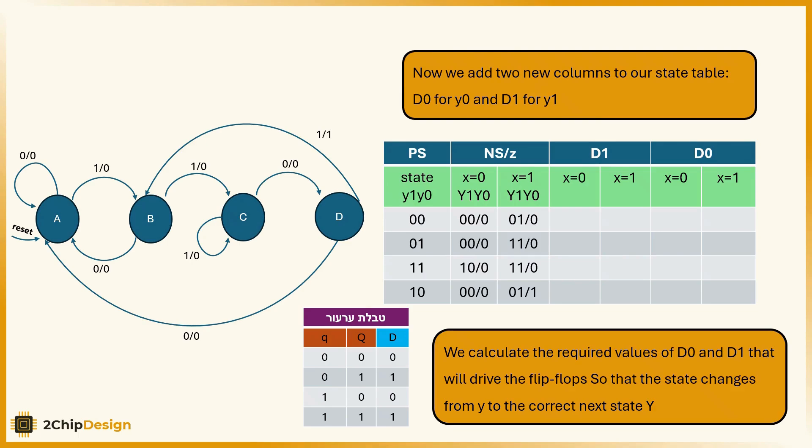Now, we add two new columns to our state table, D0 for y0 and D1 for y1. We calculate the required values of D0 and D1 that will drive the flip-flops so that the state changes from y to the correct next state, Y capital.